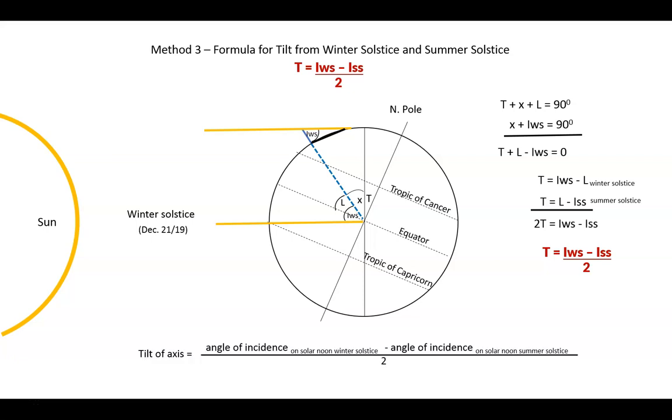Translating this to words, we're saying that the tilt of the axis is found by taking the angle of incidence on solar noon of the winter solstice, subtracting the same thing, angle of incidence on solar noon for the summer solstice, and dividing by 2.